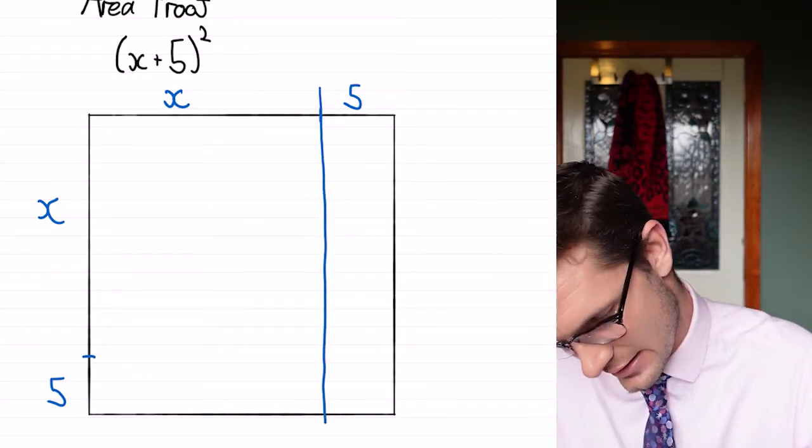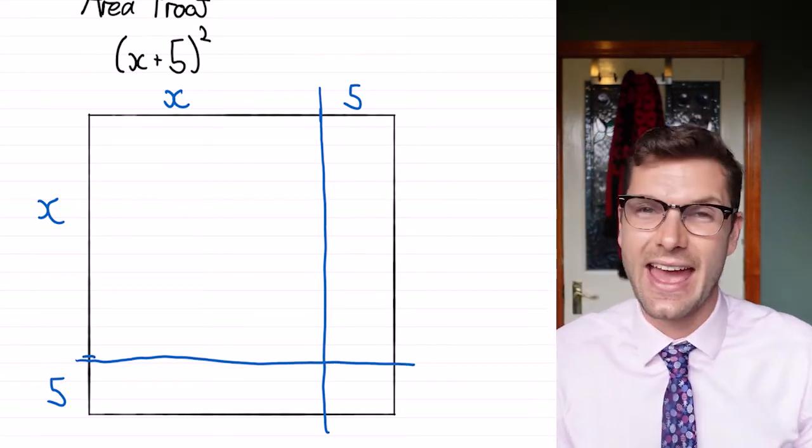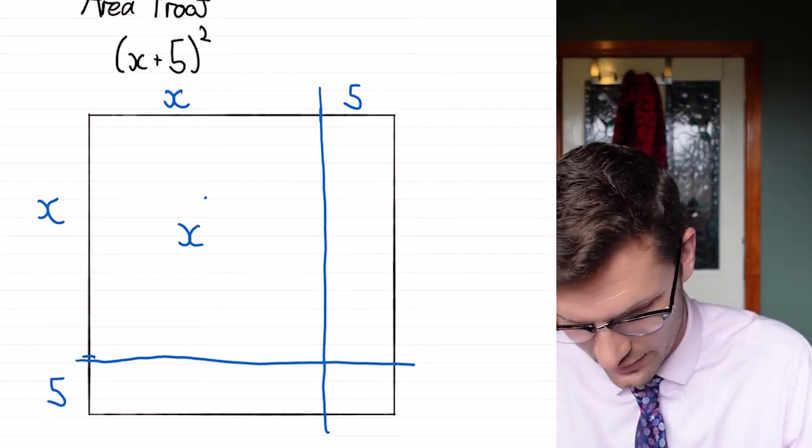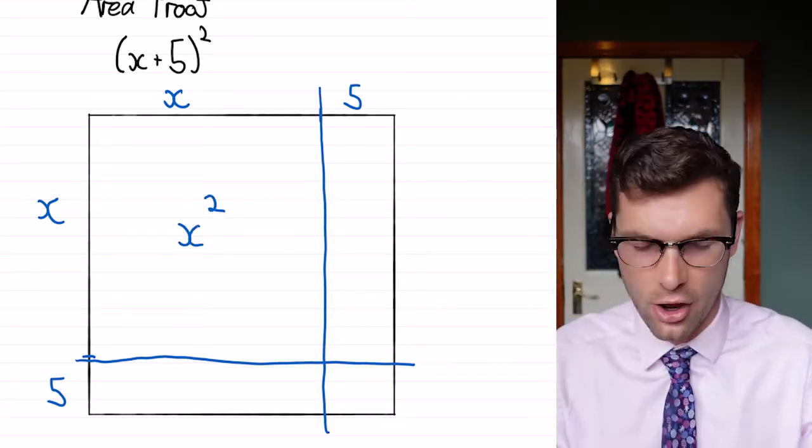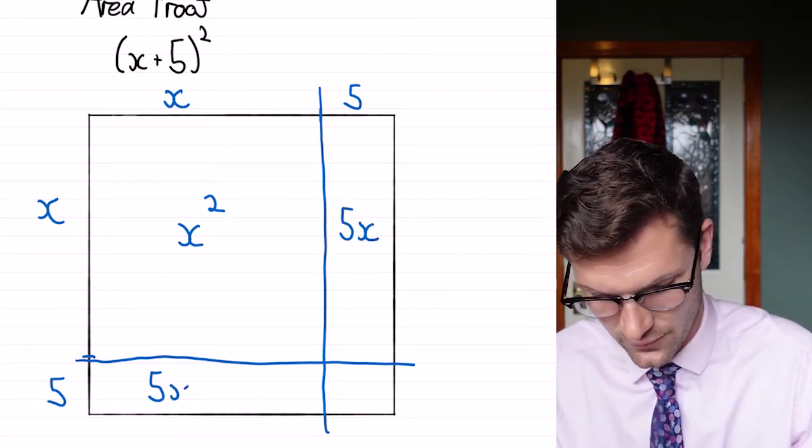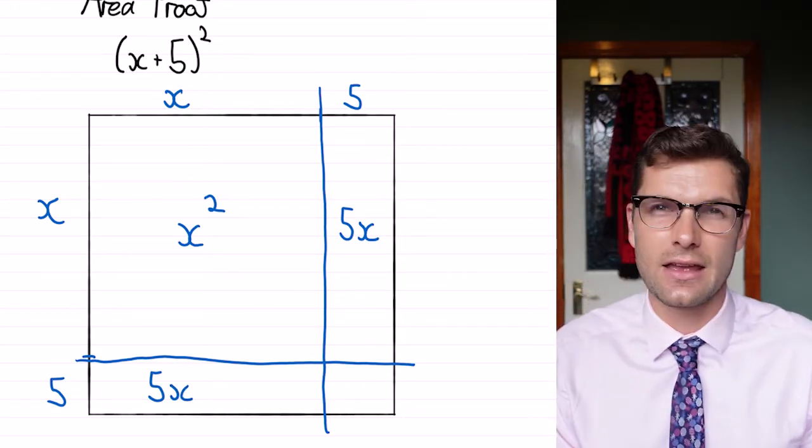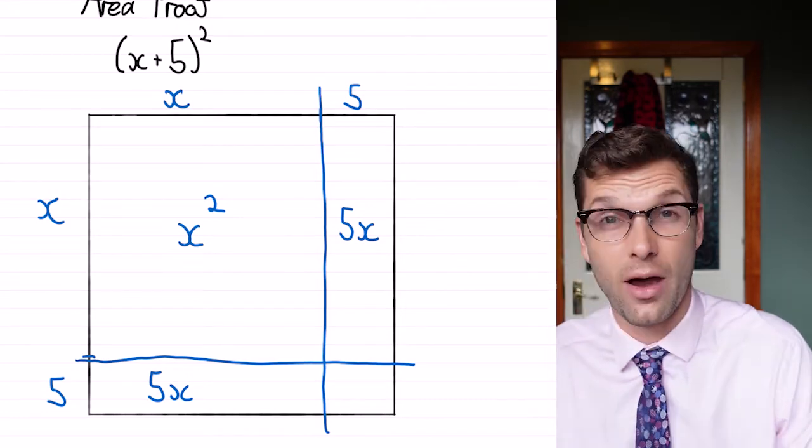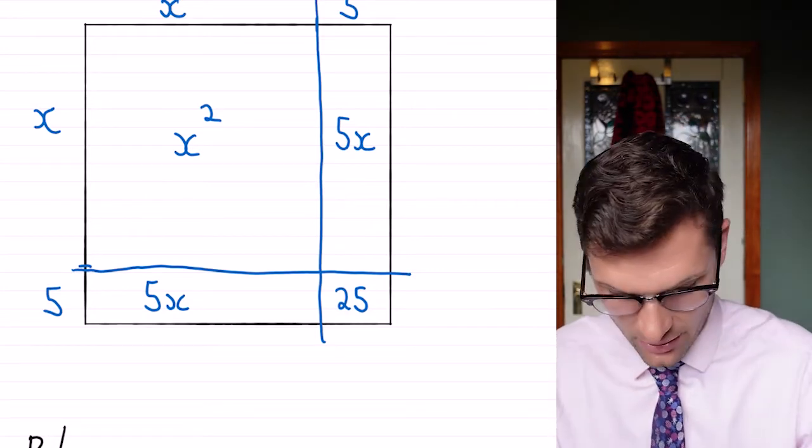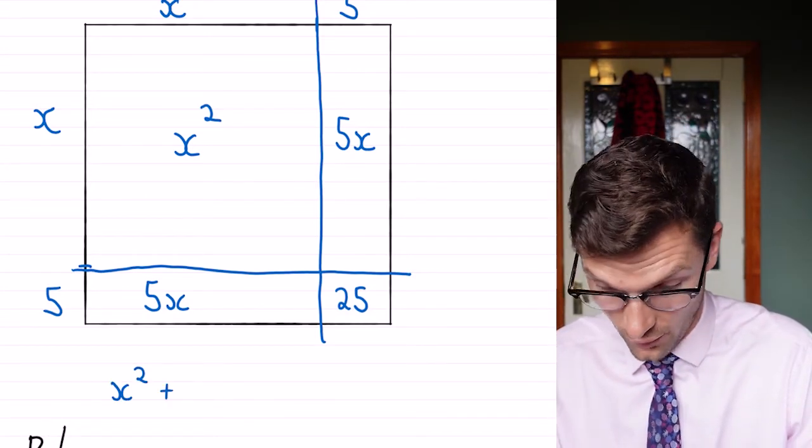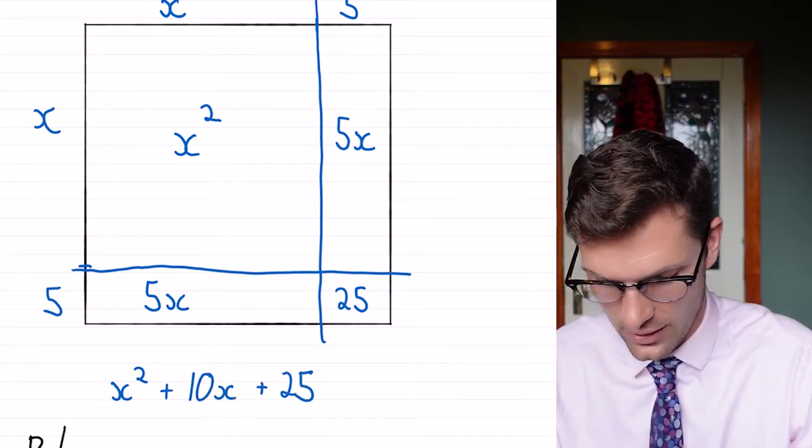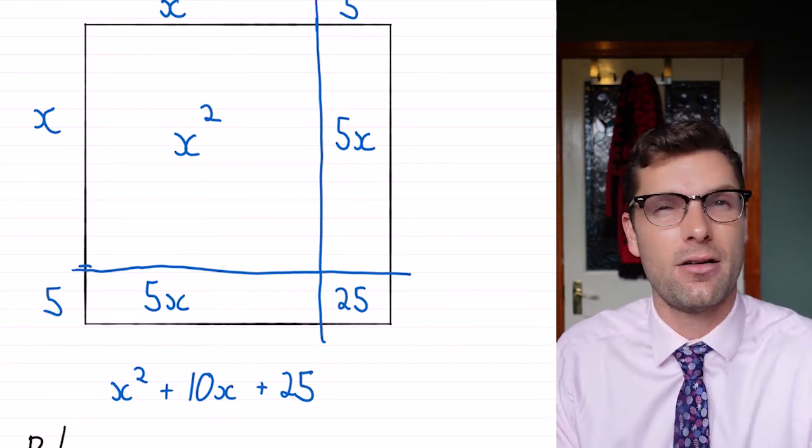So if I put in these two lines here to break this up, the area of that really big square is x multiplied by x. So this whole thing is x squared. The area over here is 5 multiplied by x, and the area down here is 5 multiplied by x as well. In this little corner, we've still got our 5 by 5. So this area is 25 units. So if we add all these areas together, we're left with x squared plus 5x plus 5x, so 10x plus 25. And that's the same answer that we got from our algebraic FOIL.